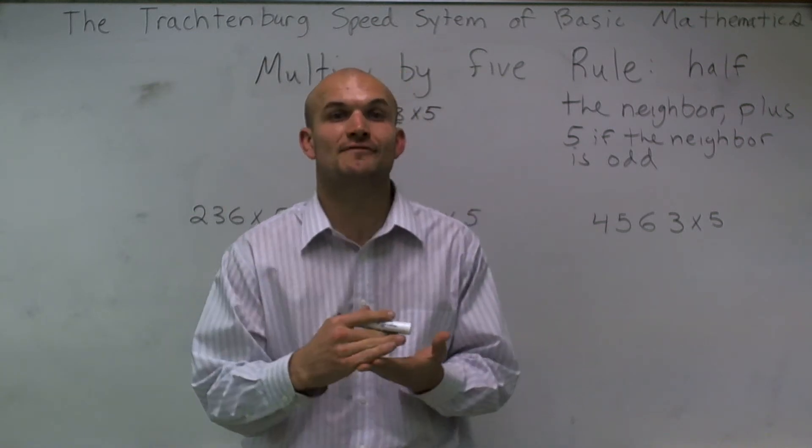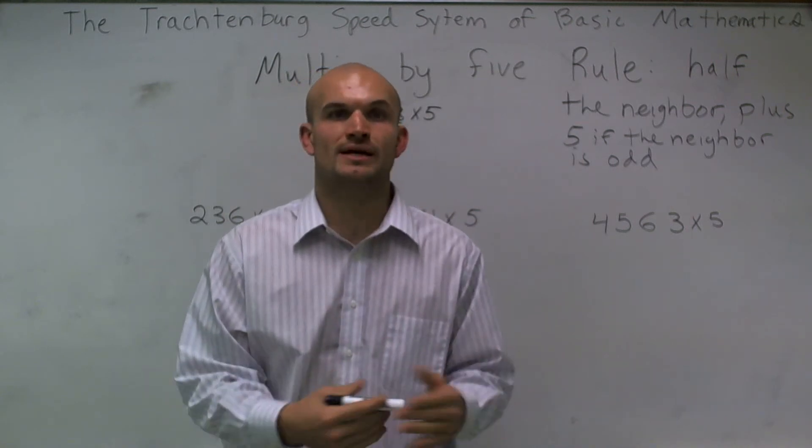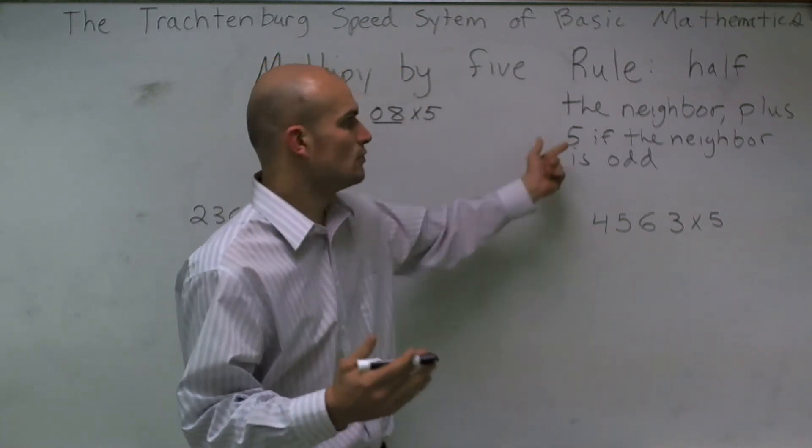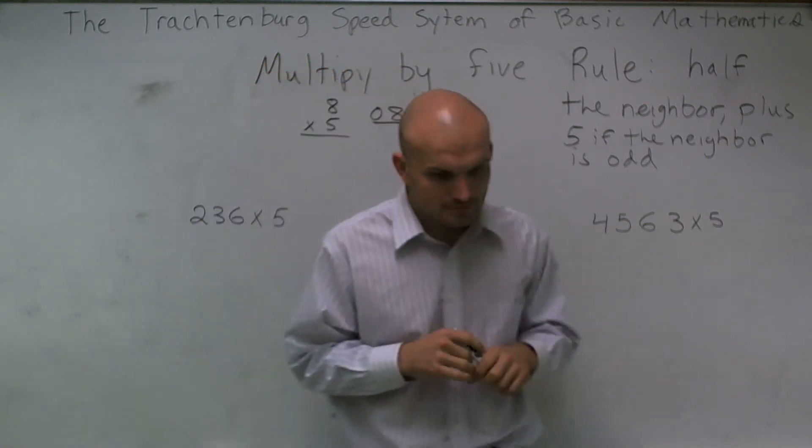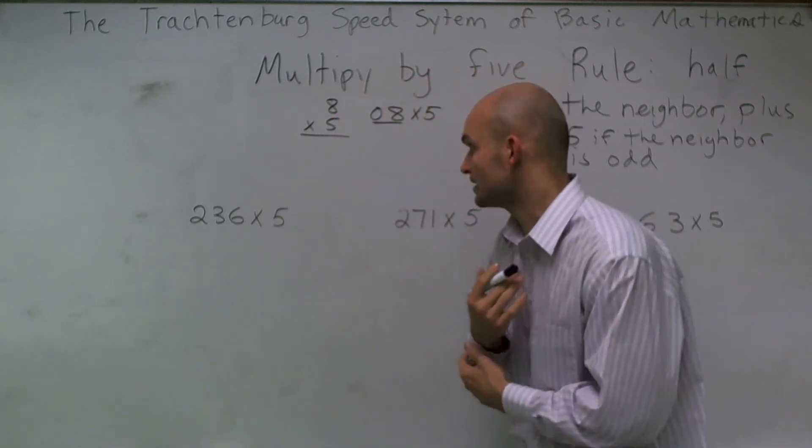So remember, half of 5 is going to be 2. Half of 7 would be 3. So we're going to round down our decimal. And to kind of compensate for that, we're going to be adding the 5. Now, the Trachtenberg system, for those of you that are new to this, it's pretty much a way for us to eliminate having to remember our times tables.